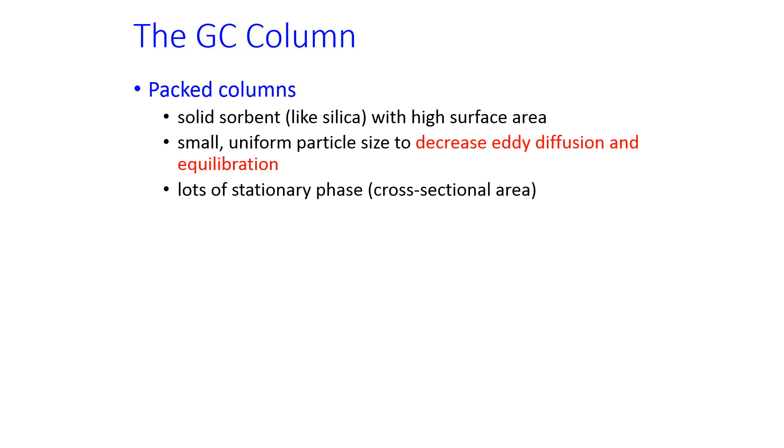The GC column itself can be either a packed column, which we'll talk about first, or a different kind. Packed columns use a solid sorbent, like silica SiO2, that has a relatively high surface area, and it's packed inside the column, hence the name.